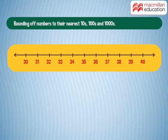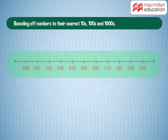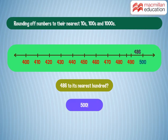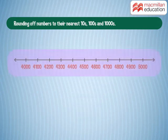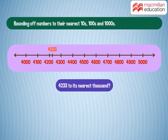Which number would you get if you round off 34 to its nearest tens? 30! Right! And how about 486 to its nearest hundred? That's 500! Now let us round off 4,233 to its nearest thousand. The answer is 4,000!